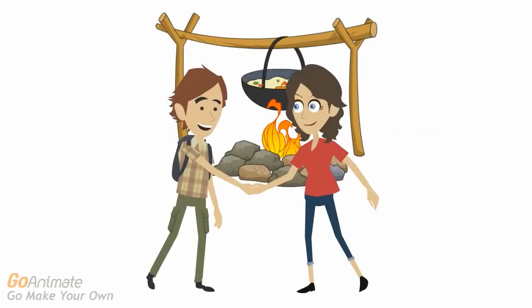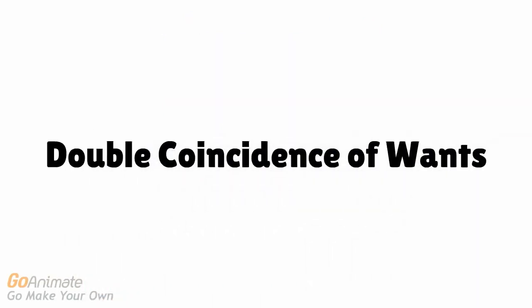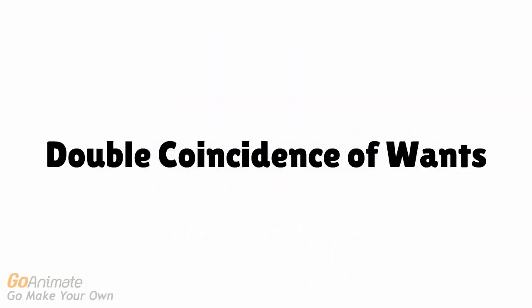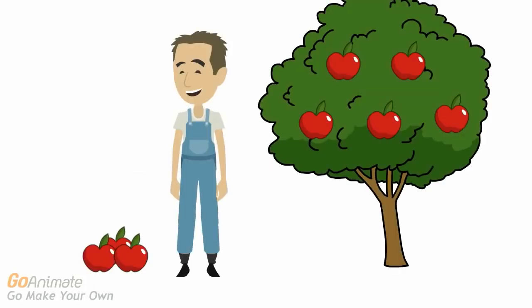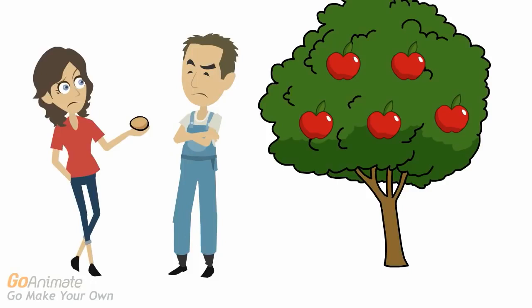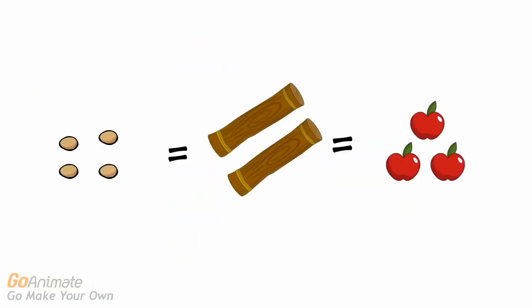Although this seems perfectly fine, barter has a disadvantage which economists call the double coincidence of wants. To put it plainly, this means that to barter, you must find someone who has what you want and wants what you have. This obviously limits trade tremendously. For example, let's say an apple farmer enters the scene. Mary would like to buy an apple, but Jack doesn't want any chickens or eggs — he wants firewood. Mary will have to trade for some wood with Billy before she can trade for an apple from Jack. The more people that enter our society, the more confusing trade will become.